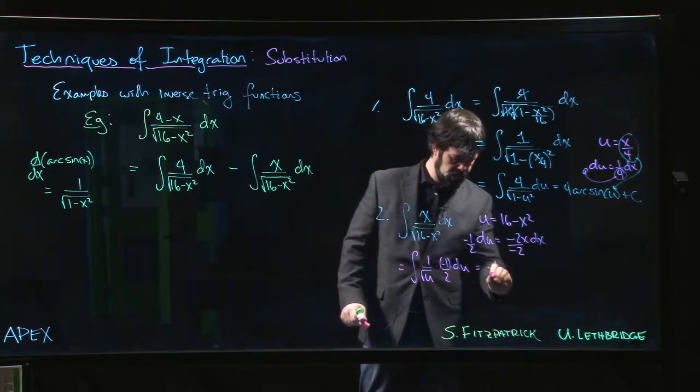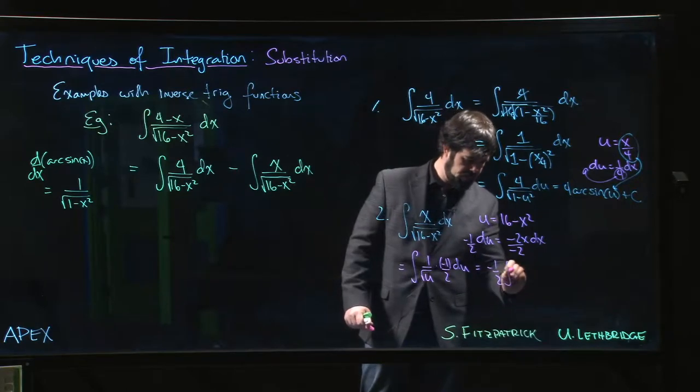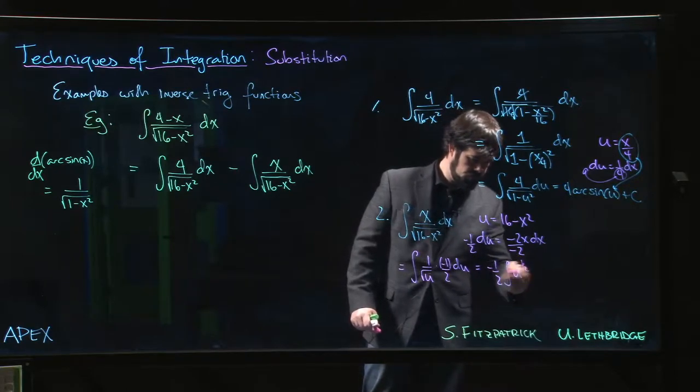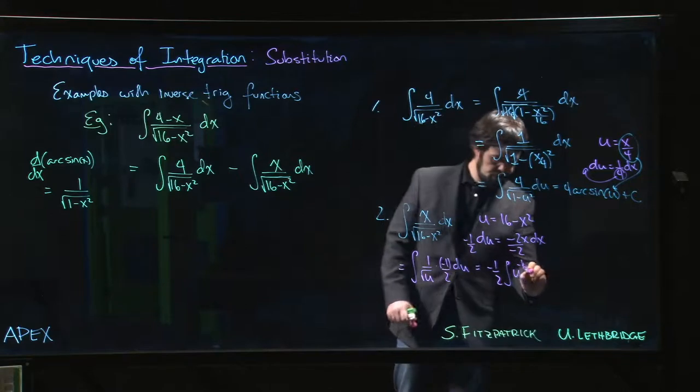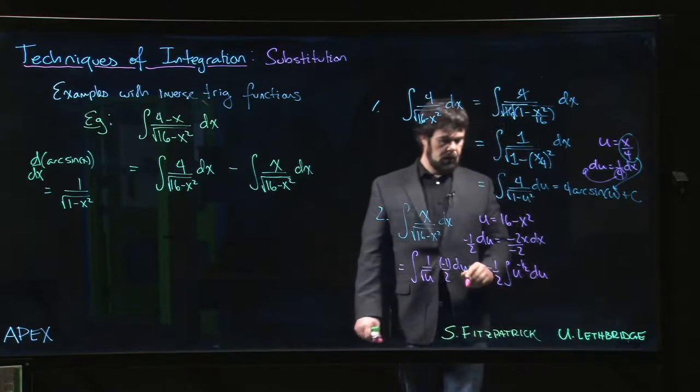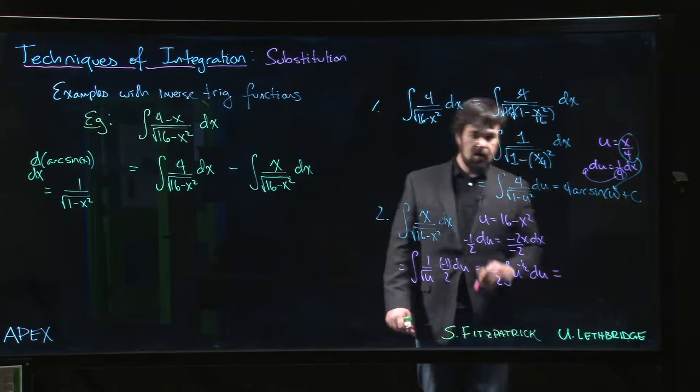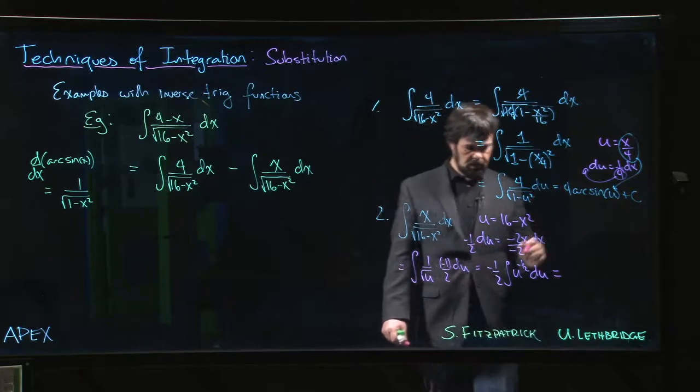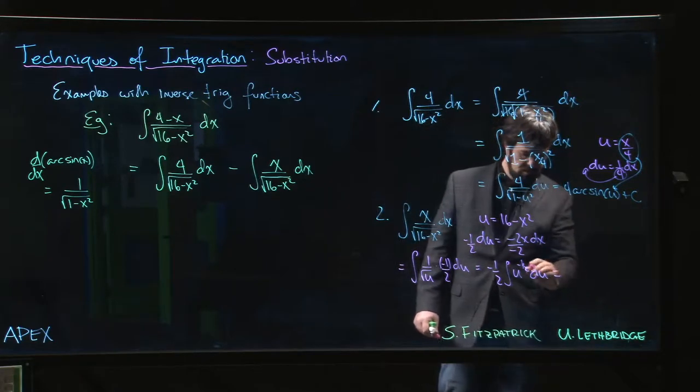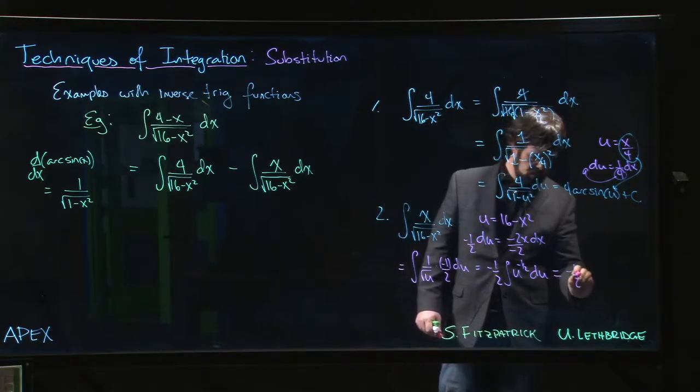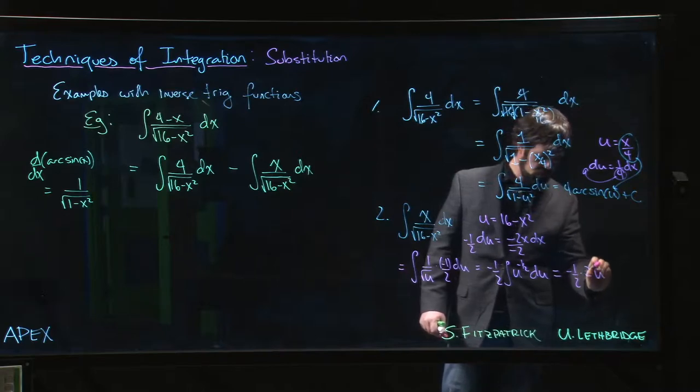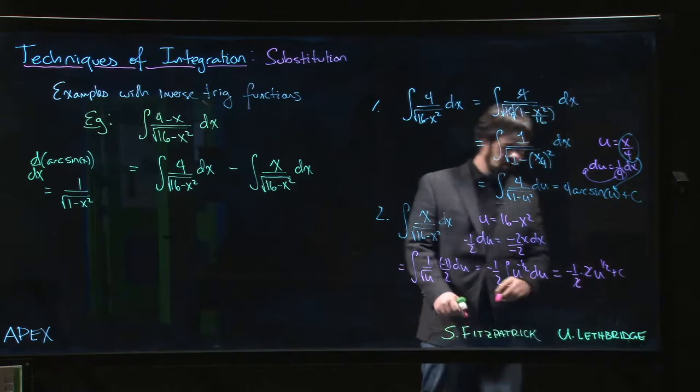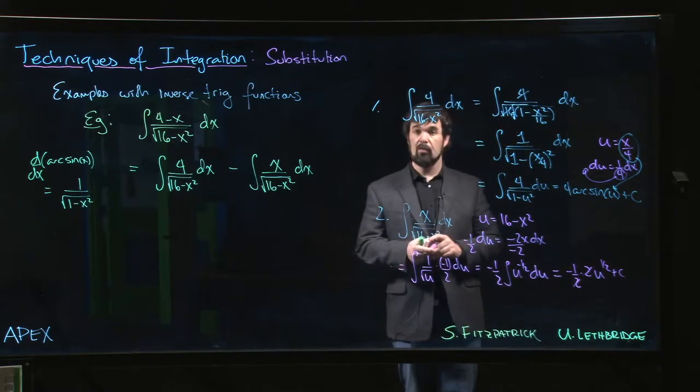So bring the constant out, minus 1 half. That's u to the minus 1 half. So adding 1 to our exponent, minus 1 half plus 1 gives us plus 1 half. Dividing by 1 half is multiplying by 2. So what we get is minus 1 half times 2u to the 1 half. Can cancel the 2s, so we get minus root u.